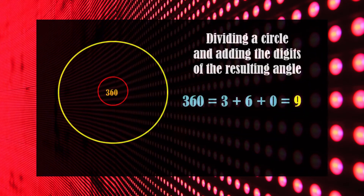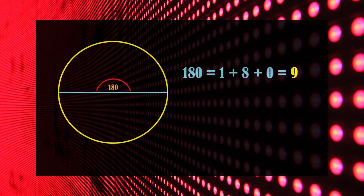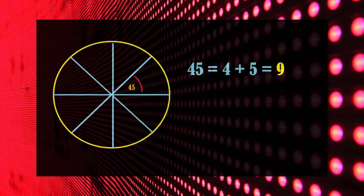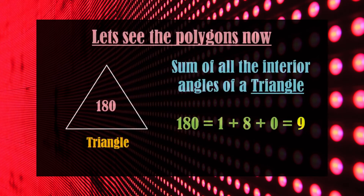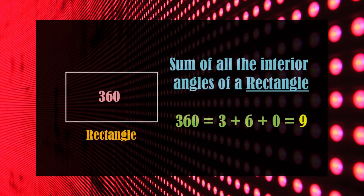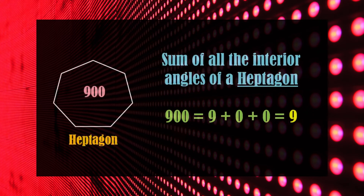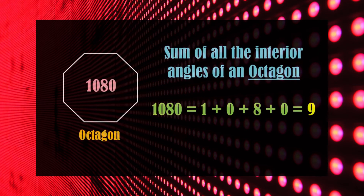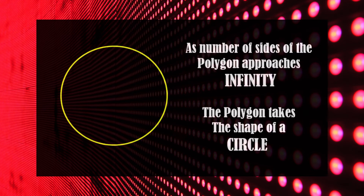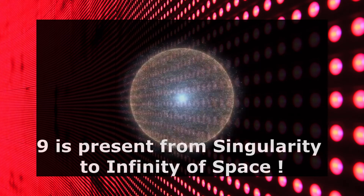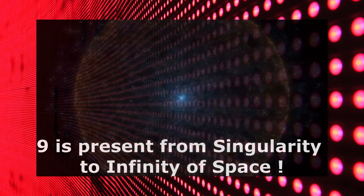Did you notice an amazing thing here? When we were dividing the circle in half repeatedly, we were reaching the singularity of space. As every time we got number 9, it means number 9 follows the space up to its singularity. And when we were increasing the number of sides of the polygon, the polygon was looking like a circle — as the number of sides approaches infinity, it becomes a circle. As in all the polygons we got number 9, it means number 9 also follows space up to infinity. So number 9 is present from singularity of space to the infinity of space.